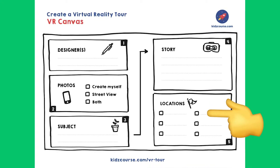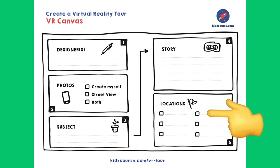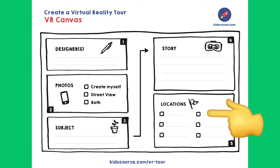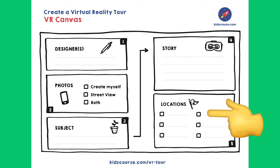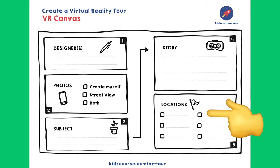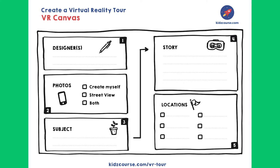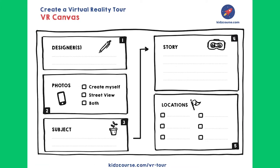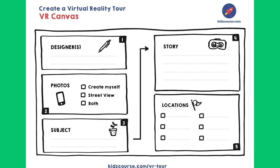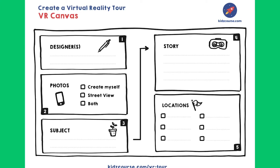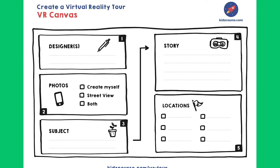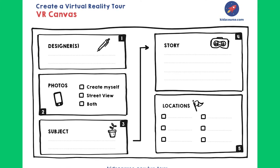And let's do box number five too. On which locations does your tour take place? Say your subject is 'the most beautiful places on Earth' — then you write down all the places you want to include in your tour. If this is the first time you are going to build a VR tour, I would not choose too many locations. Four to six is more than enough. You can always add more locations, or scenes, later. Pause the video and fill out the boxes on the right-hand side of the design canvas.